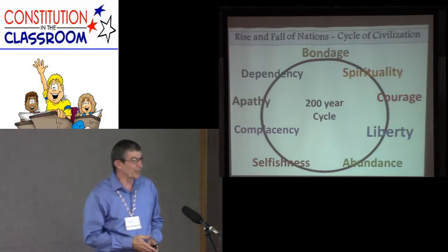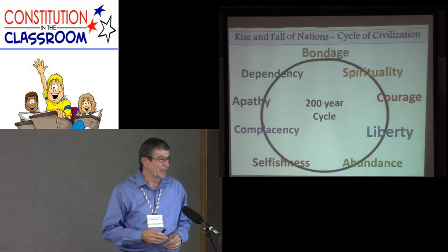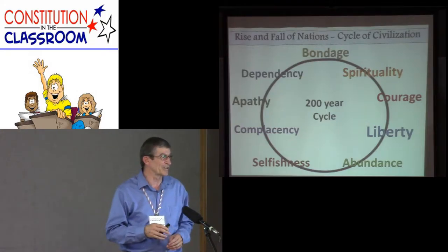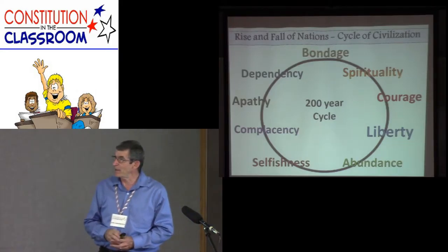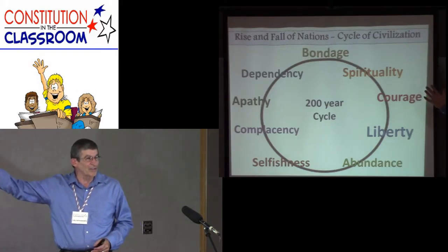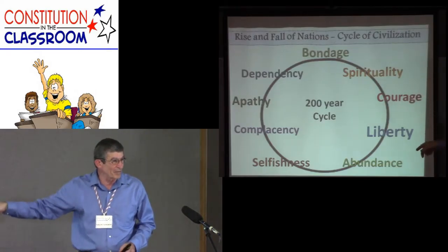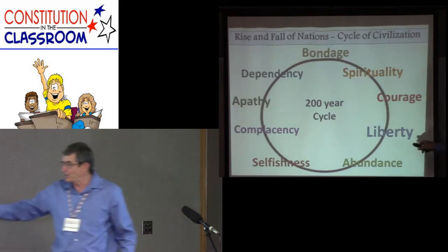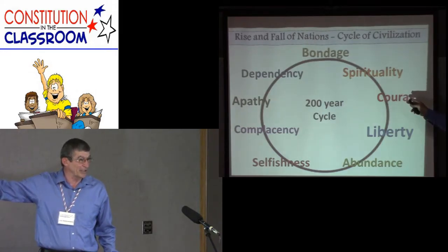Alexander Tytler was a contemporary of the Founding Fathers, living in the very same time frame. He was a Scottish philosopher who overlaid all the civilizations of mankind onto this cycle and found that every one of them fell within all of these parameters as they moved from one stage to the next. There could be no advancement or decline without having arrived at the previous stage.